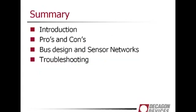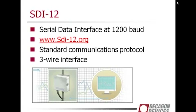I'll give you a brief introduction of what SDI-12 is, the pros and cons, then we'll talk about building some sensor networks and troubleshooting. SDI-12 stands for Serial Data Interface at 1200 baud. I highly recommend you check out the website www.sdi12.org, where all of the standard communications are and you can find SDI-12 compatible devices. It's a great resource if you're going to be using the standard communication protocol.